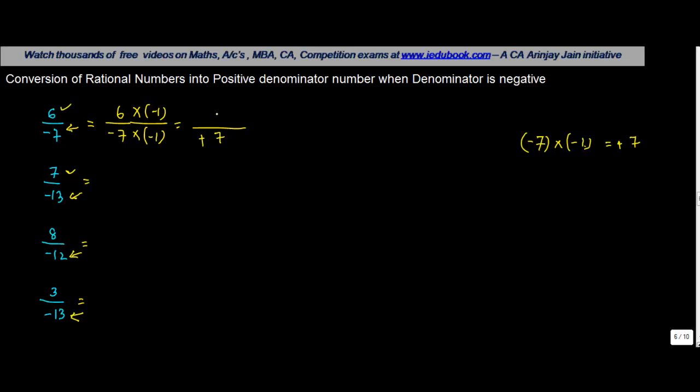6 into 1 will give you 6, but this is a multiplication of integers with different signs, so therefore the product will have a negative sign.